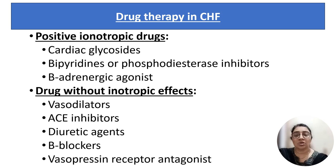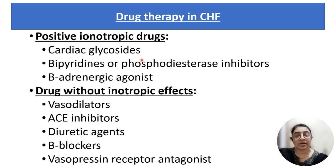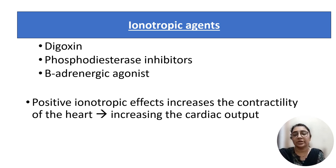To achieve our goal, we can prescribe the following therapies for heart failure. The first group is positive inotropic drugs like cardiac glycosides, bipyridines or phosphodiesterase inhibitors, and beta adrenergic agonists — all these drugs increase the force of contraction of the heart and increase cardiac output. The second group is drugs without inotropic effect like vasodilators, ACE inhibitors, diuretics, beta blockers, and vasopressin receptor antagonists, which affect by decreasing the load on the heart. Inotropic drugs like digoxin, phosphodiesterase inhibitors, and beta adrenergic agonists are all positive inotropic drugs that increase contractility and cardiac output.